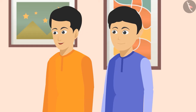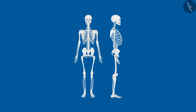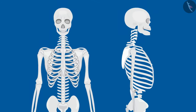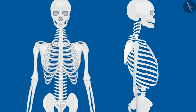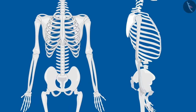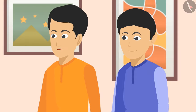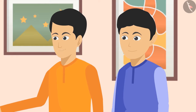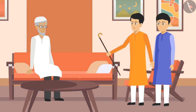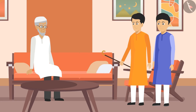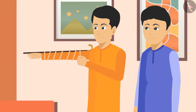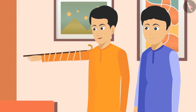'Chacha ji, the basic structure of our bodies is made up of bones. These bones are very hard and strong. They are not flexible, which is why we can't bend them. I will explain it with the help of this stick — if I tie the stick to my shoulder, I won't be able to bend my hand at all.'